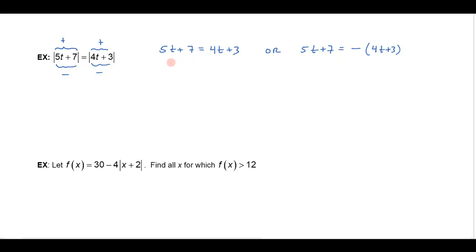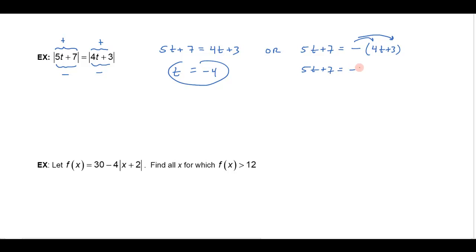You still end up with two parts and you solve those to get the correct answer. So in this case, if I subtract 4t from both sides I'll get t equals negative 4. Over here I have to distribute the minus sign, so I get 5t plus 7 equals negative 4t minus 3. Adding 4t to both sides gives 9t, and bringing the 7 over gives negative 10, so t equals negative 10 ninths. Two answers.